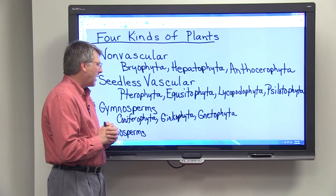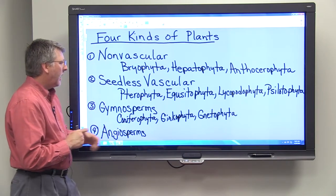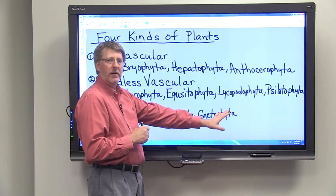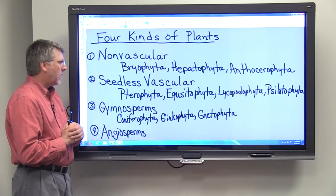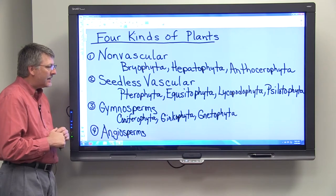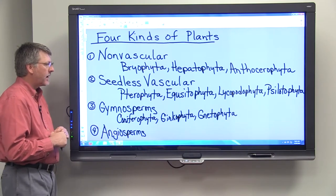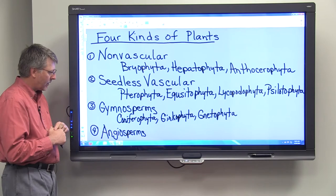Ginkophyta, which contains the ginkgo tree, and gnetophyta, which you'll probably go your entire life without seeing. It's a very strange division of plants, contains one species, Welwitschia mirabilis, which is found in the desert of Africa.